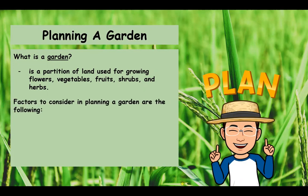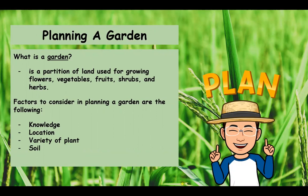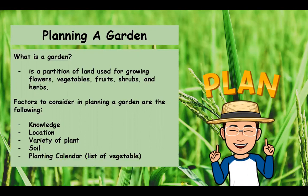The factors you need to consider in planning a garden are: first, knowledge; second, location; third, variety of plant — whether it is a vegetable, a crop, a fruit tree, a shrub, a flowering plant, or an herb. Next is soil — you need to check whether the soil is sandy, loamy, silty, or clayey.